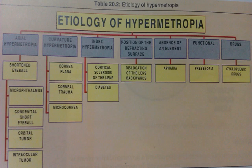In summary, the etiology of hypermetropia can be axial, curvature, index, positional, absence of any refracting element (aphakia), functional, or due to cycloplegic drugs. You can remember this from the table.